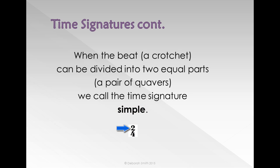The top number of a time signature in simple time tells us the number of beats per bar, and the bottom number tells us the value of those beats.